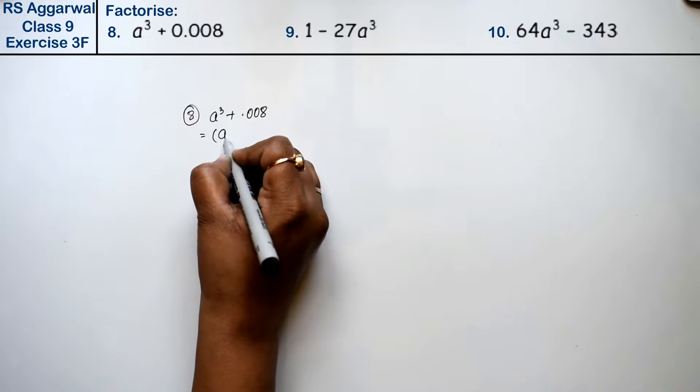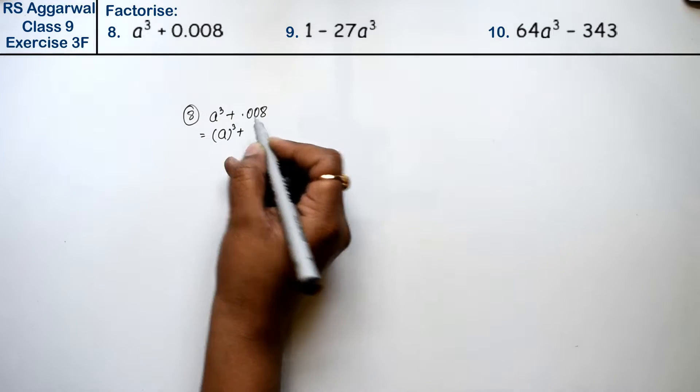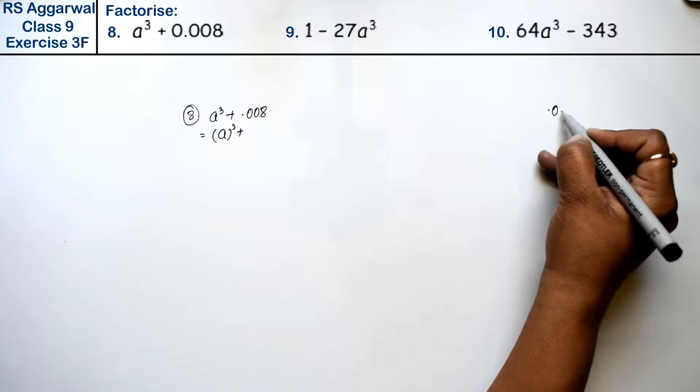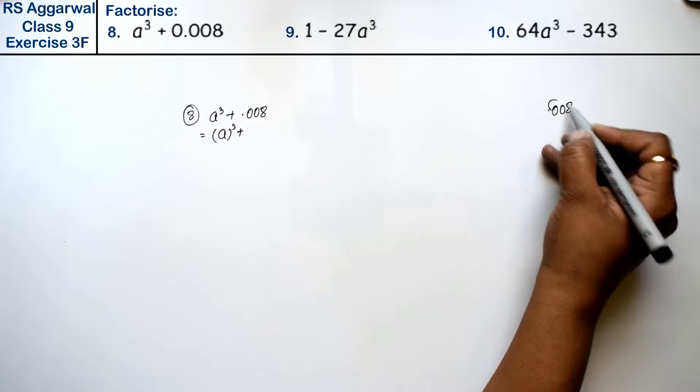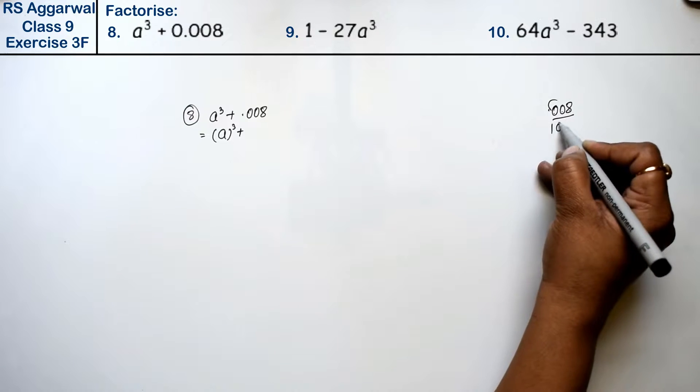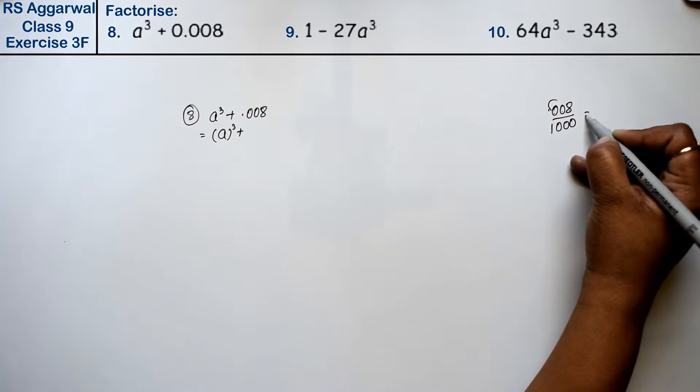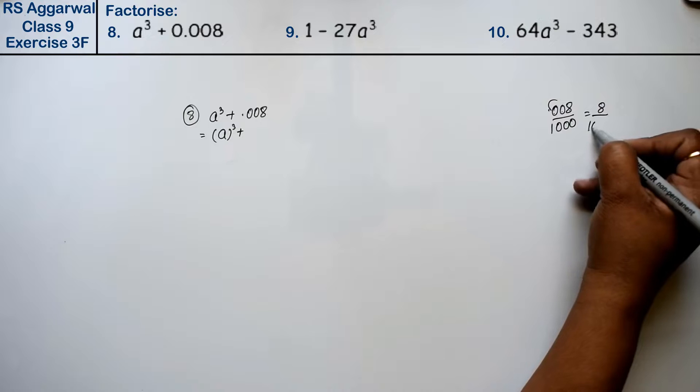a³ is a whole cube. And 0.008 is also a whole cube, which is 0.2 whole cube. We can write this as 8 upon 1000.